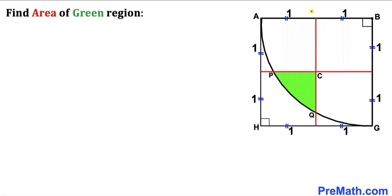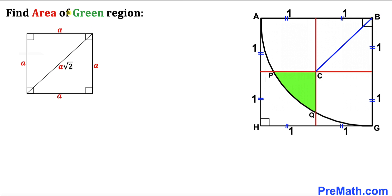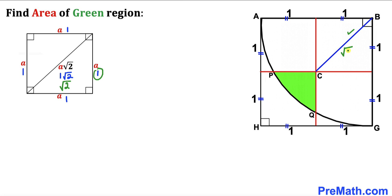Let's make an observation. We can see that this big square ABGH is subdivided into 4 congruent squares with dimension 1 unit. We are going to draw some auxiliary lines — I have connected point B with C, giving us diagonal BC for this small square. For a square with side length 1, its diagonal is 1 × √2 = √2. So this diagonal BC is √2 units.